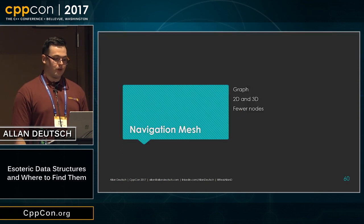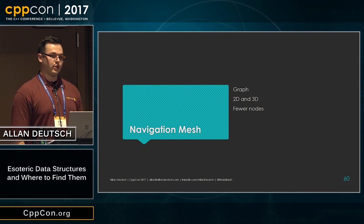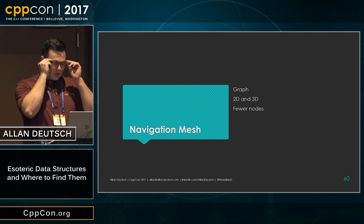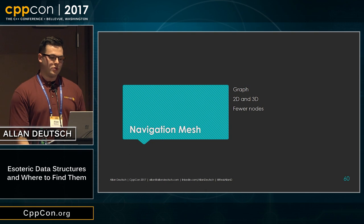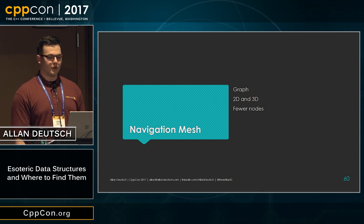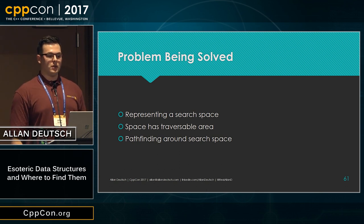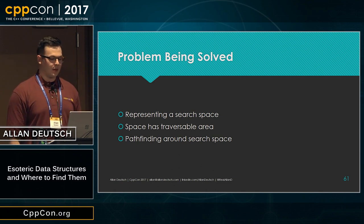The next adventure we want to go on is navigation meshes — and it's a bit of an adventure because they represent how you find things. They work well with A-star search algorithms as a representation of the search space. A navigation mesh is a graph that works for 2D or 3D, and in general it'll produce fewer nodes than other representations of a two- or three-dimensional traversable search space. The problem being solved is that you have some search space you want to represent, need to know which areas can be traversed and which can't, and probably want to pathfind around it, typically in a game.